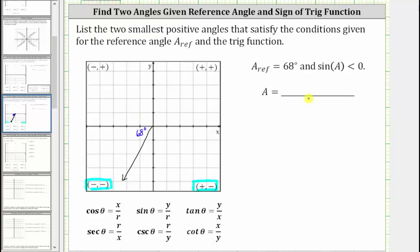If angle A terminates in the fourth quadrant, the terminal side would need to be this ray, where again the reference angle of this angle here is 68 degrees.